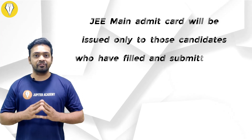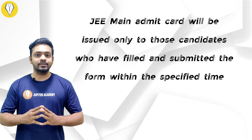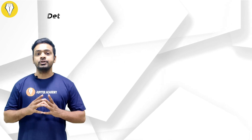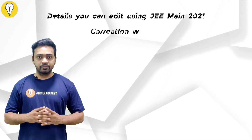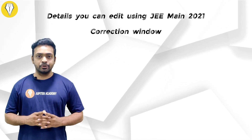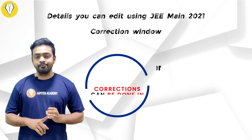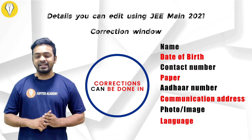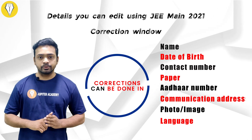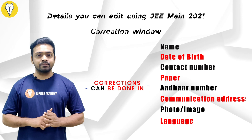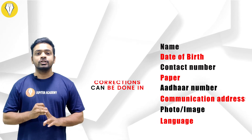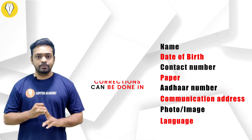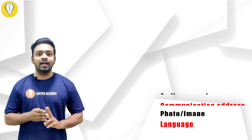The JEE Main admit card will be issued only to candidates who have filled and submitted their form within the specified time. The details you can edit using the JEE Main 2021 form correction include: your name, date of birth, contact number, pen and paper based mode, Aadhaar number, communication address, photo or image uploaded, category, and language.